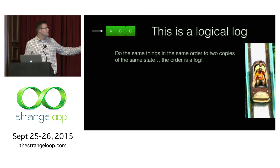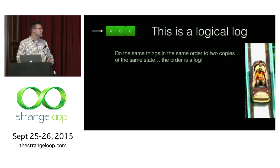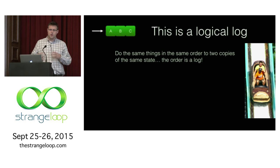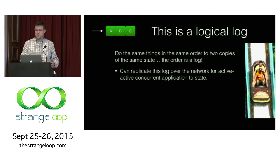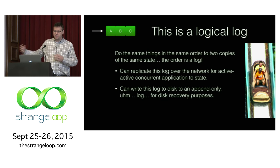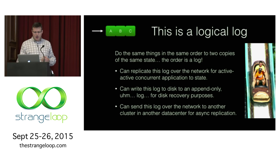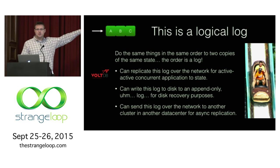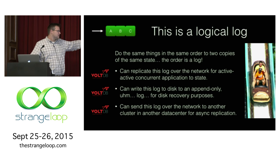The ABC ordering here is a logical log — I do the same things in the same order to two copies of the same state. I can replicate this log over the network for active-active intercluster replication. I can also write this log to disk so that if something goes wrong, I can replay it later in deterministic order and get back to the same state I had before I crashed. I can even send this log over the network to another data center, replay the log there, and end up with the same state. VoltDB does this — except we don't do the last one anymore, and I'll cover why in a bit.